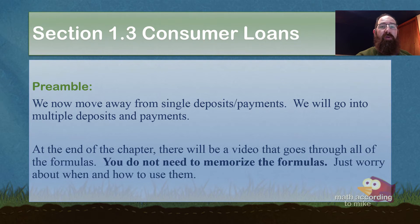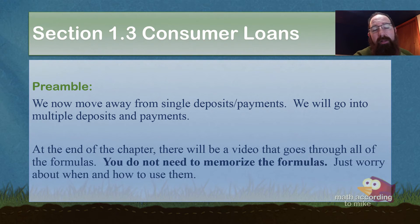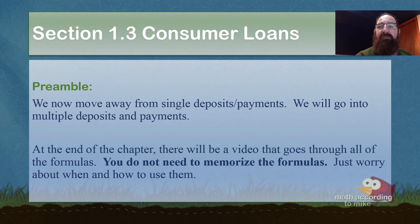Our first formula for this section tells you how much money you have left over after partially paying on a loan. This is what happened not too long ago when the housing market crashed — you may have heard about it. Everyone's home values decreased, as did their interest rates. So a lot of people were refinancing, and they would need this formula to figure out how much more they would have to pay off if they went with a different bank. That's the purpose of this formula.